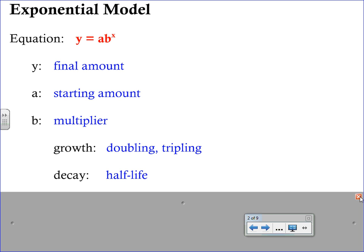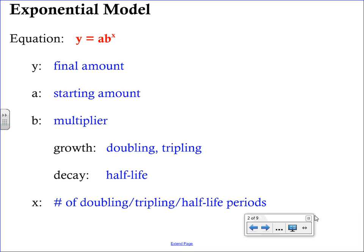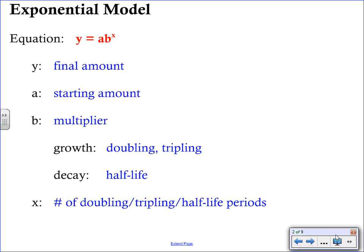Now X is still going to represent the time but it's not necessarily how many years or how many days have passed. It's how many doubling, how many tripling, or how many half-life periods have gone by. So a lot of the values for X you're just going to have to do some common sense reasoning to figure out what you should put in for X.